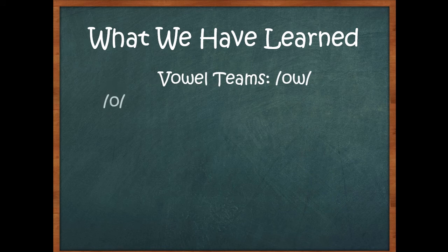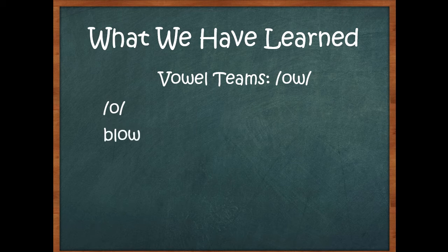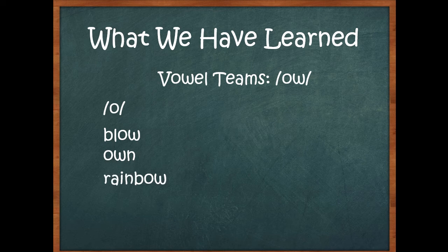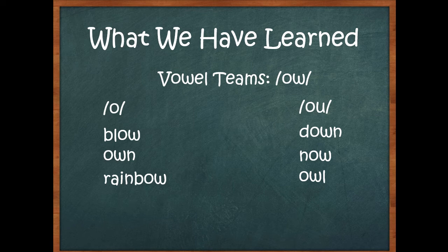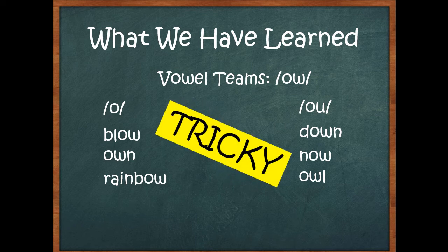We also talked about OW. OW can make a long O sound, like in blow and own and rainbow. But it can also be owl, like OU is in words like down and now and owl. So OW is a tricky one. Be careful.